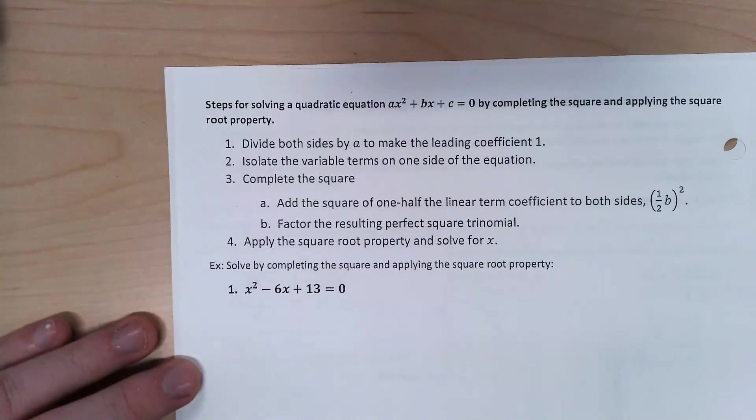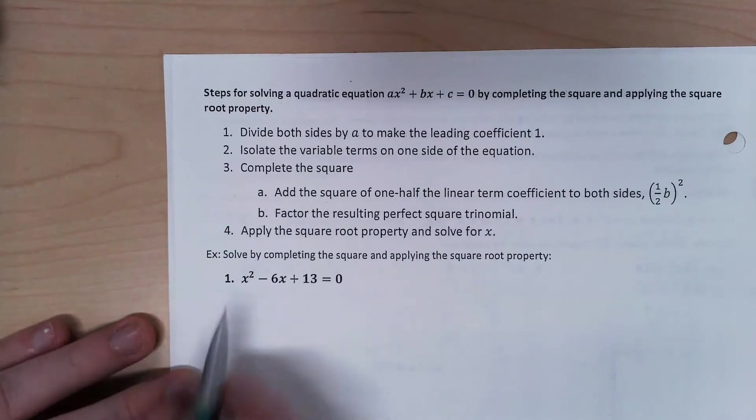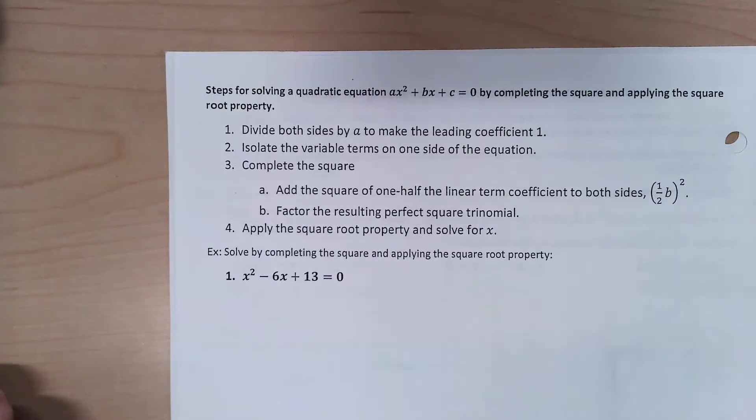So, first thing we want to do is, if there's a coefficient on our x squared here, get rid of it by dividing both sides by that value. In this case, that's not a problem, so we're going to move on to the next step.